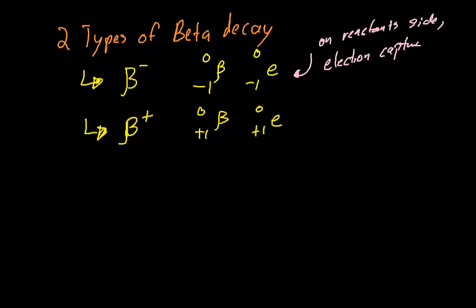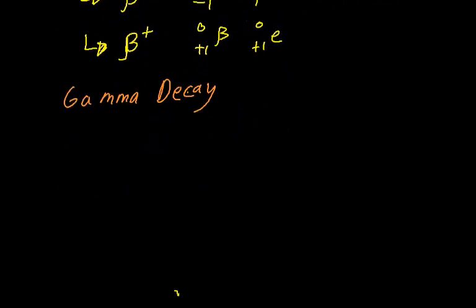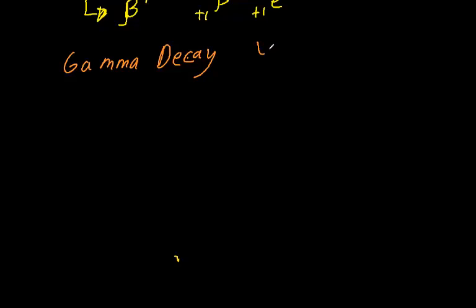And then we have one more type of radioactive decay. It's called gamma decay. And so this type of decay isn't actually a particle, but it's energy. It's shown by gamma, the γ, and it's just energy.